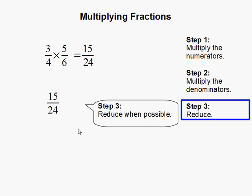15 over 24 becomes 5 over 8. 15 can be divided by 3, which gets you 5. And 24 can be divided by 3, which gets you 8.